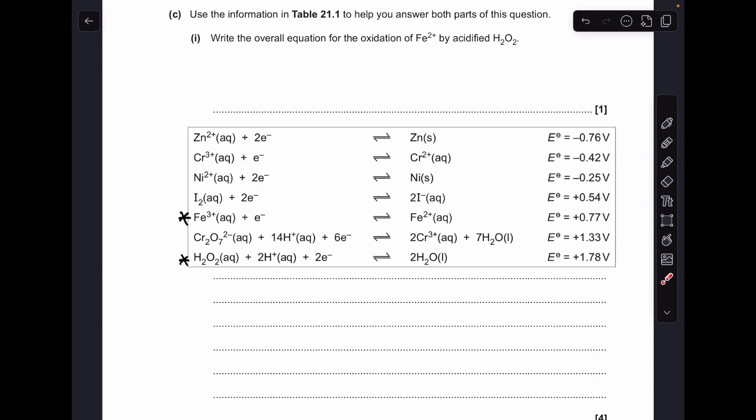So we're moving on to part C, I'll just copy the table from the previous page to save me going back and forth. So we're interested in, for the first part, this system here, the iron 3, iron 2, and the hydrogen peroxide one as well.